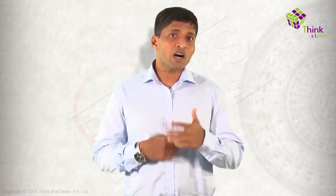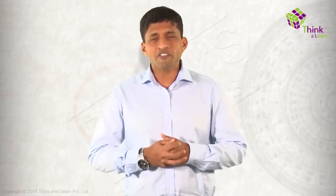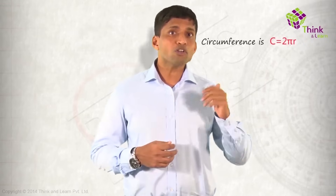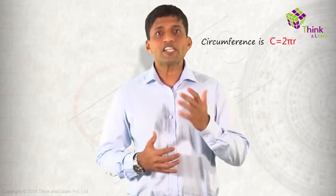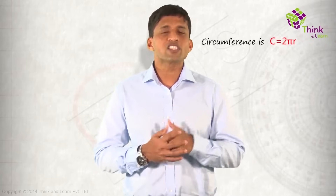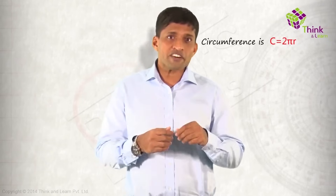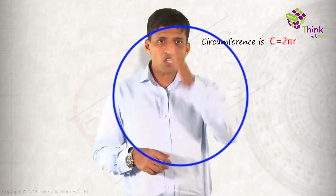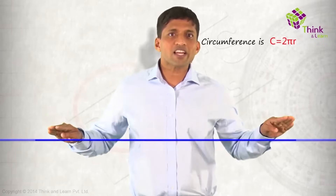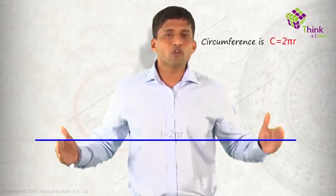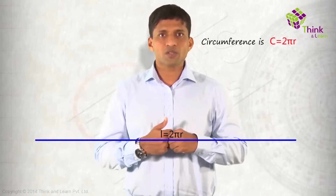The length of the complete circle is called the circumference. What is the circumference of a circle in terms of radius? It's two pi times the radius — that's why it's 2πr. If you want to visualize circumference: take a circle, cut it, straighten it out, and the length of that line will be 2πr. That is the circumference.